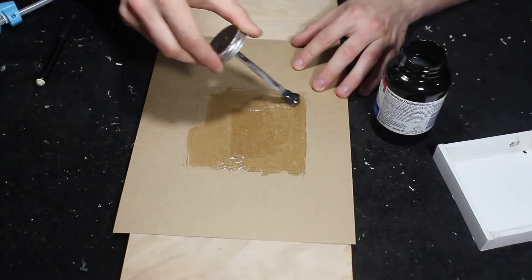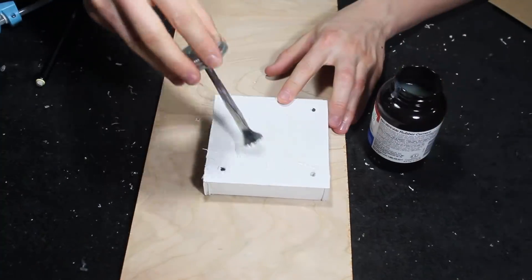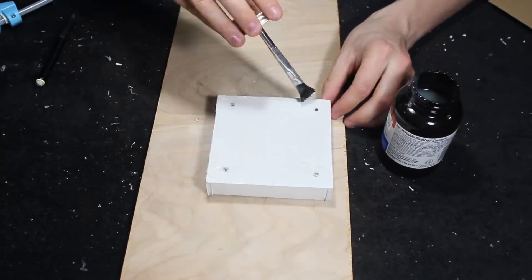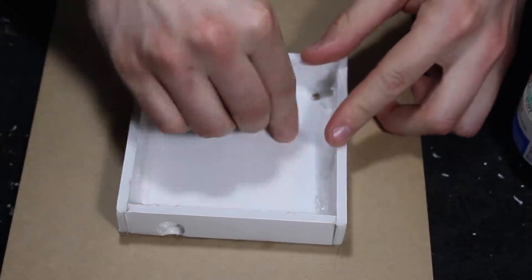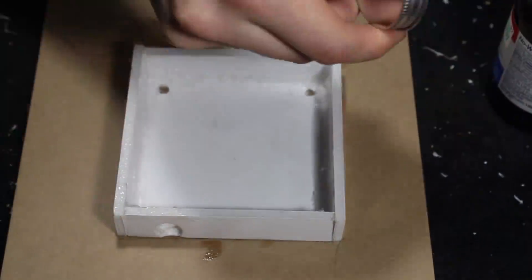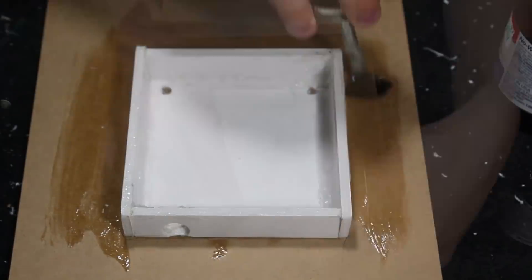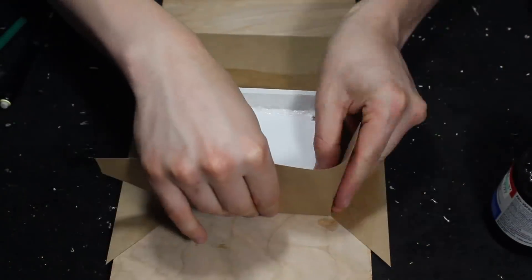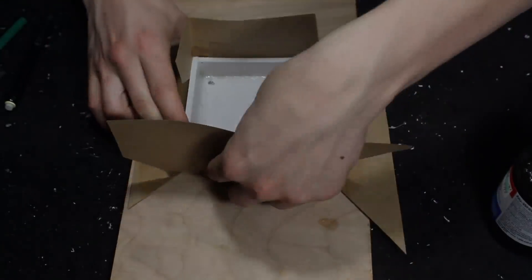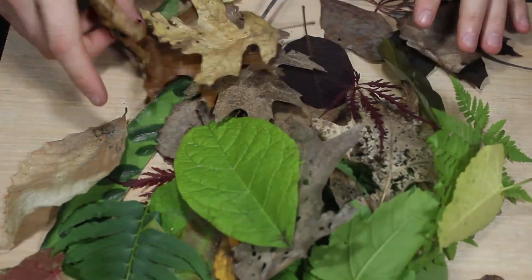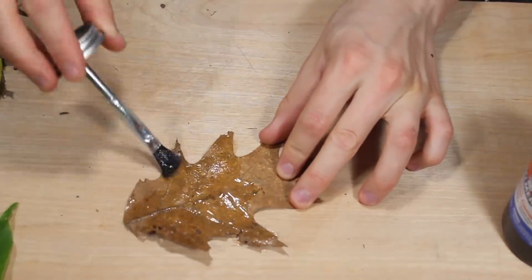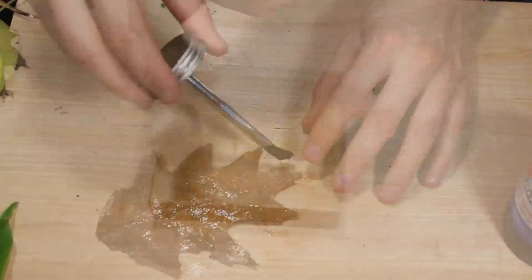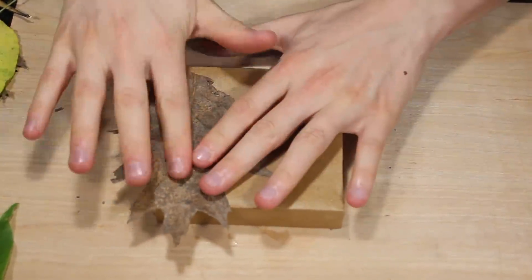From there I concealed the box with a piece of paper using some rubber cement. After that I got a bunch of leaves to conceal the structure. As before, I used rubber cement to attach the leaves to the paper. I kept layering the leaves with this technique until I got a cool look.